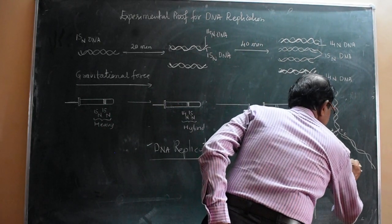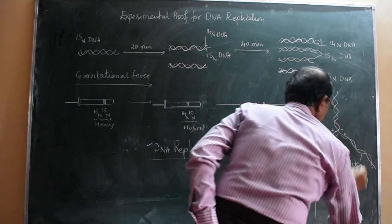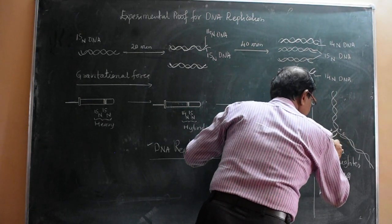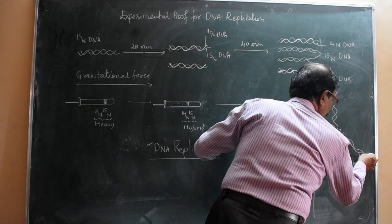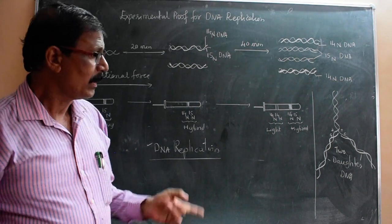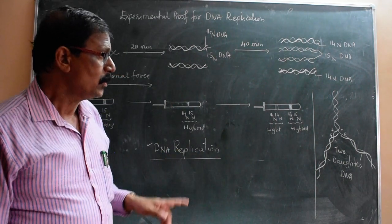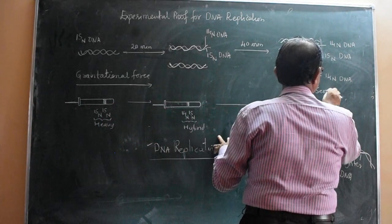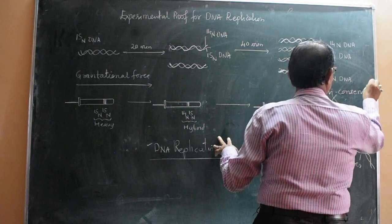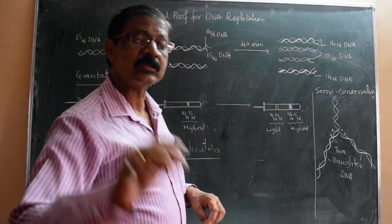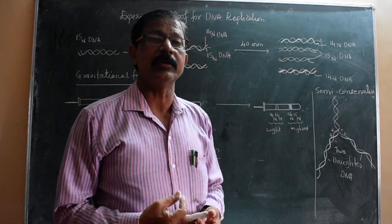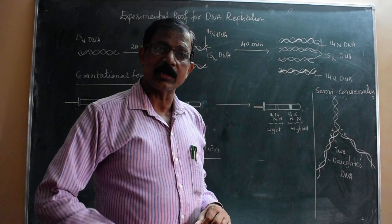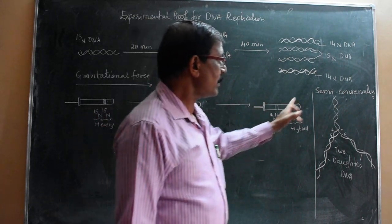These are the two daughter DNAs - this is one and this is one. One way is a newly formed DNA strand and another one is old - one is newly formed and another one is old. That is why this process of DNA replication is called semi-conservative. It is called semi-conservative because in DNA replication the daughter DNA has one old strand and one newly synthesized strand conserved.